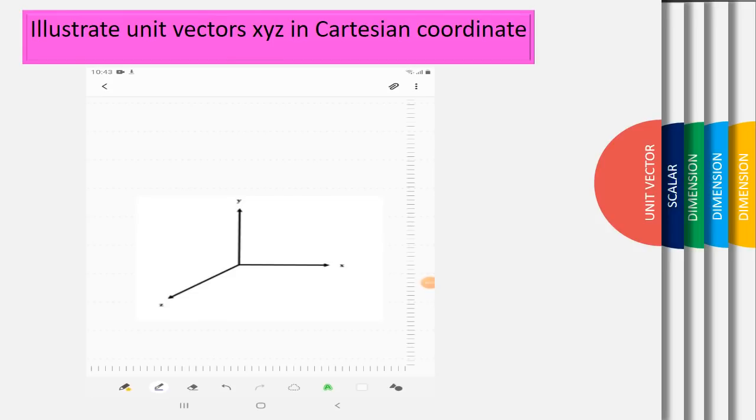Illustrate unit vector x, y, z in Cartesian coordinate. I give you one vector, let's say vector a, equivalent to 4i plus 4j plus 4k.